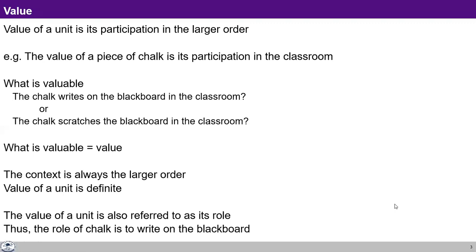If we are making use of this particular pen for writing on the whiteboard, it is fulfilling, serving its values. If we use that pen to throw and hit at a student, then it is not fulfilling its values. We are not using that pen for its value. And that is what is misuse of it. Right utilization means that I am using it for the value it has, the participation it has to fulfill.